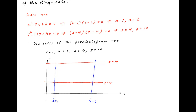Therefore, the vertices of the parallelogram are: A = (1, 4), B = (6, 4), C = (6, 10), and D = (1, 10).